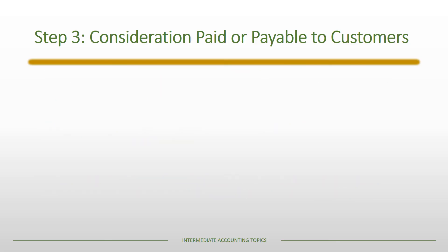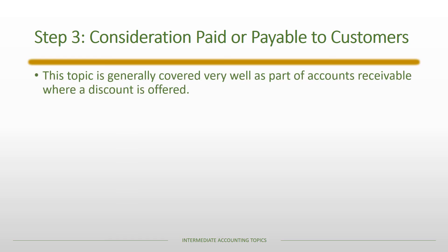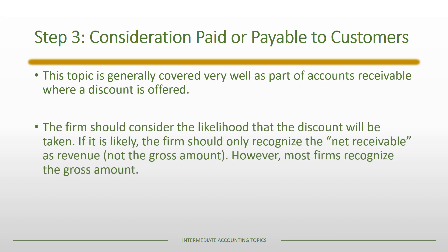Finally, consideration paid or payable to customers was largely covered in accounts receivable, so this chapter is more of a conceptual discussion. The concept is that you should report your expected amount, considering the likelihood that a discount will be taken. If it's likely the discount will be taken, the firm should recognize only a net receivable as revenue rather than the gross amount — sales revenue at the net amount with no discount subtracted. As a practical matter, most firms recognize the gross receivable as revenue and then subtract sales discounts, though guidance says whichever is most likely is what the firm should do.